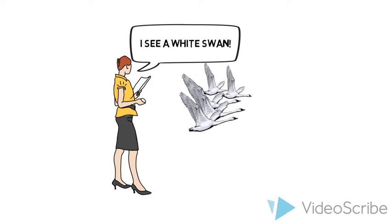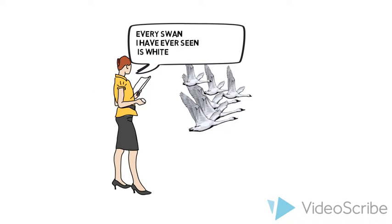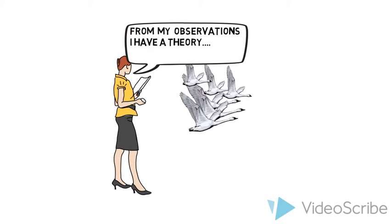In England, scientists observed swans and noted that they were always white. From these observations, they developed the theory that all swans are white.